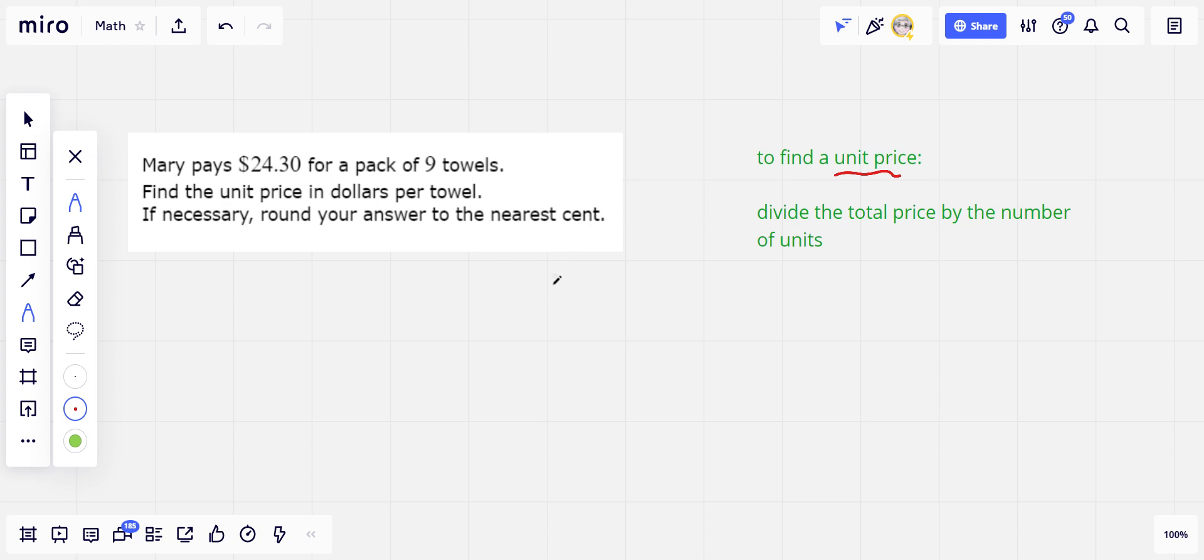So in the half dozen eggs, I'd divide $2 by 6. In the dozen eggs, I'd divide the other price by 12, and then I'd figure out how much it costs per egg. That would be a unit price.